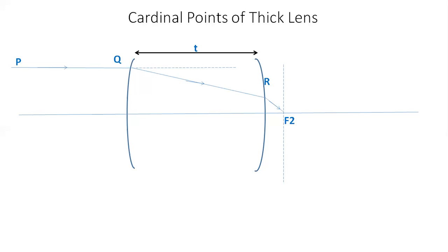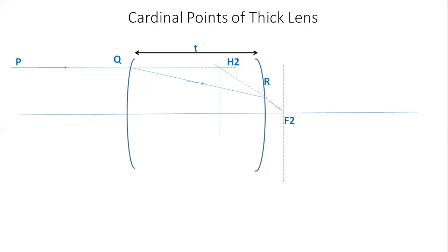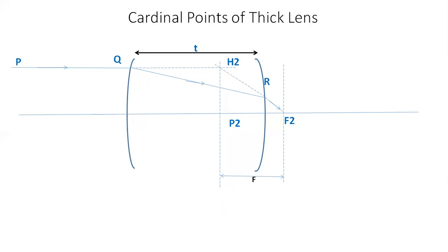Extrapolate P2 — the incident light — in the forward direction, and F2R in the backward direction. They meet at point H2. At point H2, draw a plane passing through H2 and perpendicular to the principal axis. That plane cuts the principal axis at the point P2. P2 is called the second principal point. The distance between the second principal point and the second focal point is called the focal length of the thick lens.